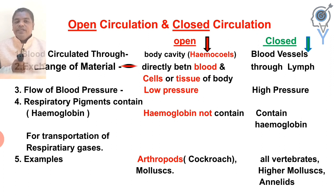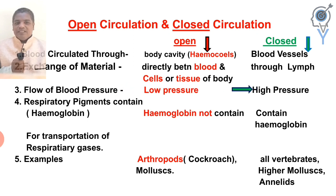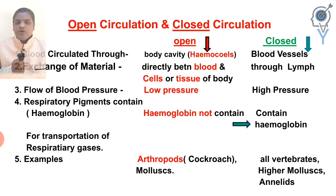In open circulation, blood pressure is low. In closed circulation, high blood pressure is present. The respiratory pigment is hemoglobin. Hemoglobin is not present in open circulation but is present in closed circulation.